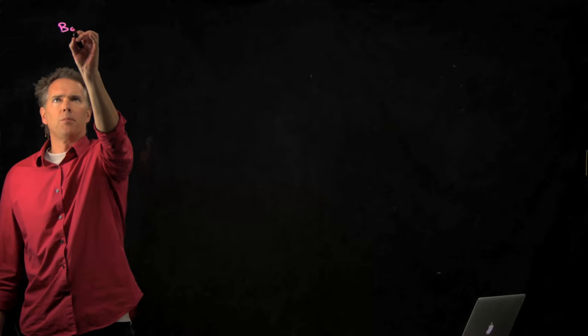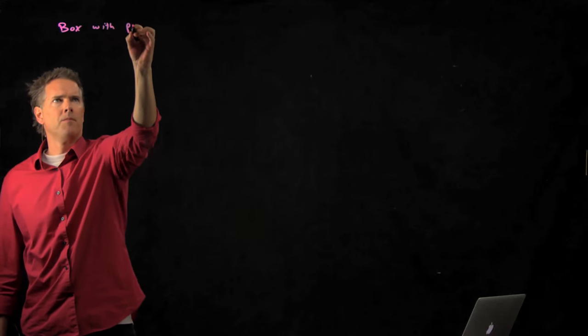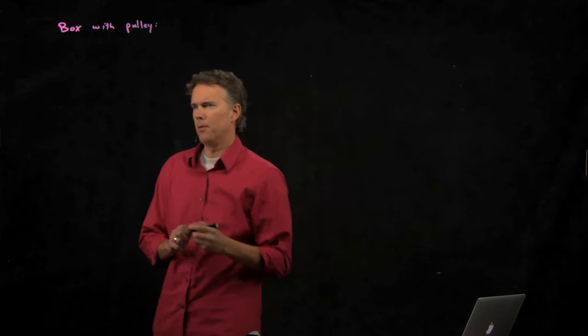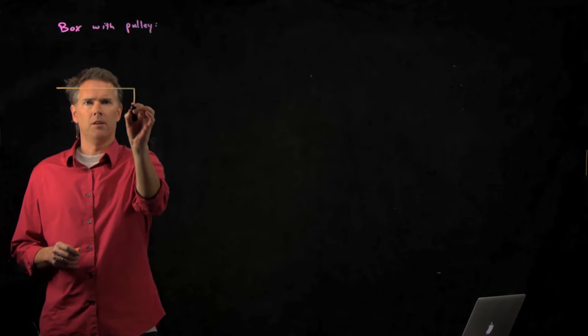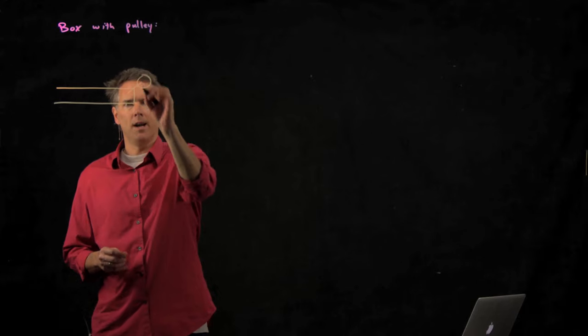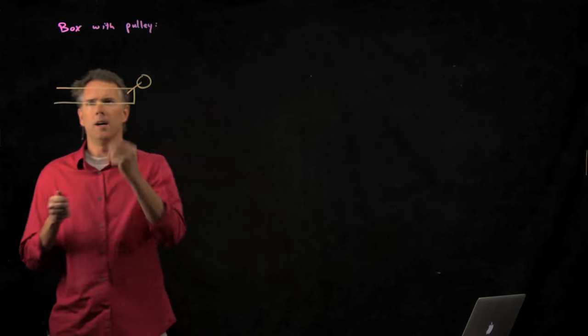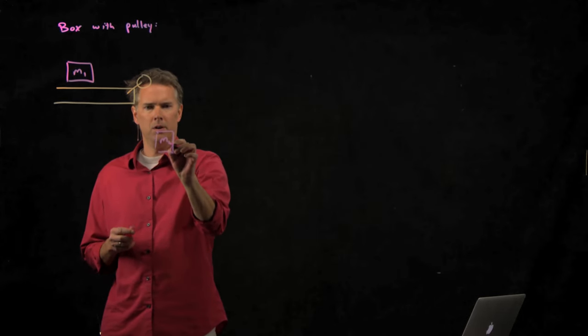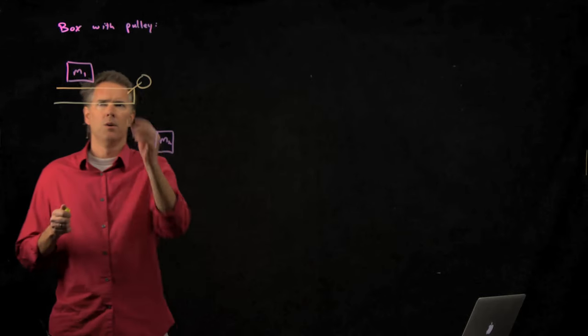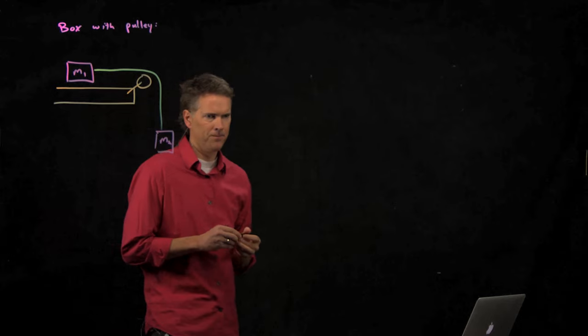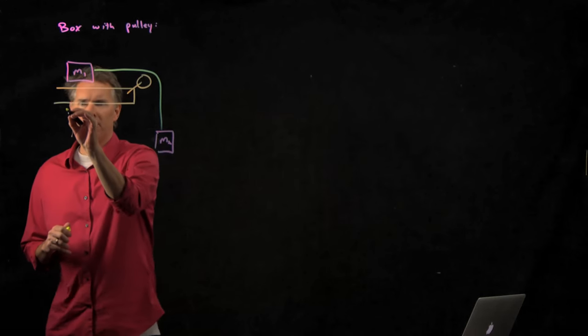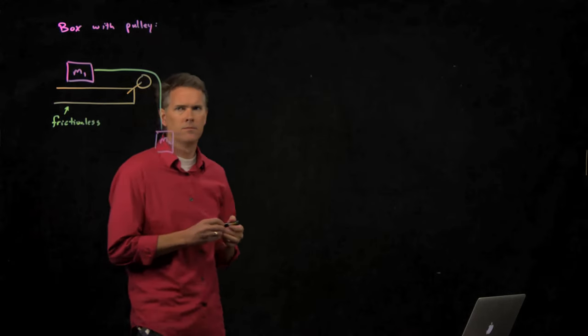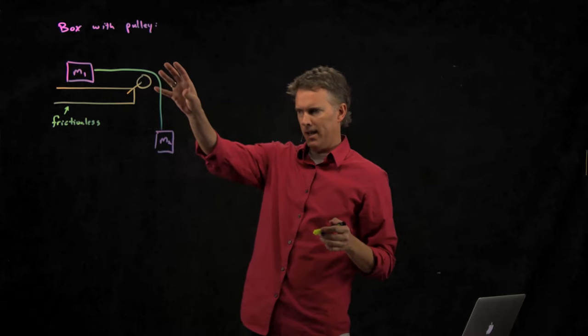And it's the old box with pulley problem. The classic physics problem dealing with pulleys is the following: Let's take a pulley and hang it off the end of the table. We'll put a box on the table M1, and put a box over here M2, and tie those two together with a rope that goes over the pulley. Let's assume that this surface here is frictionless, and the pulley is lightweight and frictionless as well.